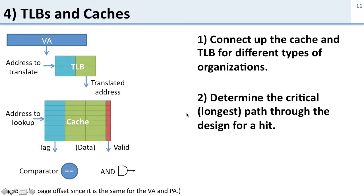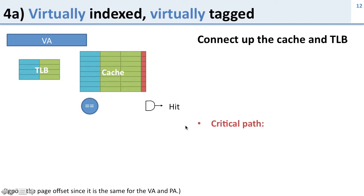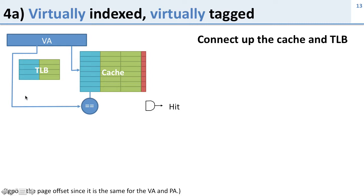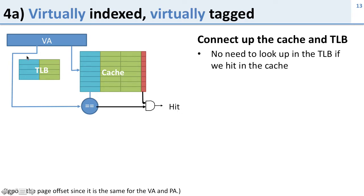This will tell us which designs are faster or slower. Here's a virtually indexed, virtually tagged (VIVT) cache. The virtual address goes into the cache and we get a virtual tag out. To check this tag we compare it to the full virtual address; if they're equal and the line is valid, we have a hit. There's no need to look up the TLB on a hit because everything in the cache is virtual. The critical path is just through the cache — it can be very fast.